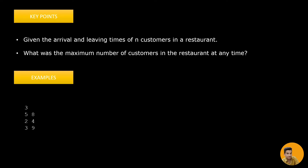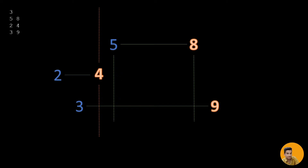For example, there are three customers: the first arrives at 5 and leaves at 8, the second arrives at 2 and leaves at 4, and the third arrives at 3 and leaves at 9. The maximum number of customers at any time is 2.